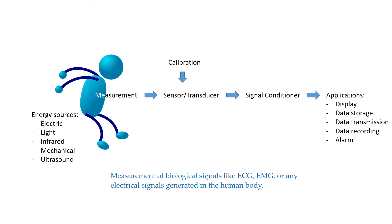Let's say we want to design a wearable system. Data recording is similar to data storage, but we use this type of data for future reference. And alarms — we can use a biomedical instrumentation system for triggering an alarm just to see if some events are abnormal, so we can prevent some diseases or injuries.